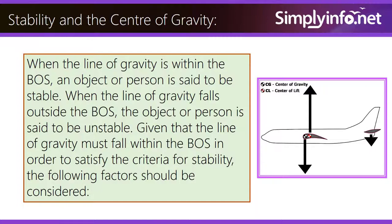When the line of gravity is within the BOS, an object or person is said to be stable. When the line of gravity falls outside the BOS, the object or person is said to be unstable.